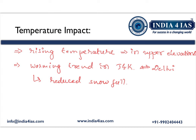Moving on to the impact of temperature on dry winter — there is a rising trend of temperature increase at upper elevations. In comparison to the plains, mountains are experiencing a more rapid increase in temperature. Comparing Jammu and Kashmir with Delhi, there is a stronger warming trend in Jammu and Kashmir, which is one of the reasons for reduced snowfall in northern India.